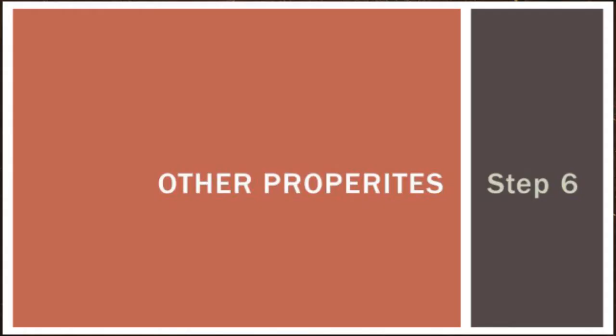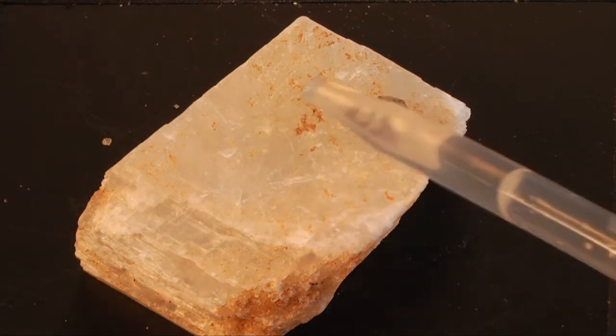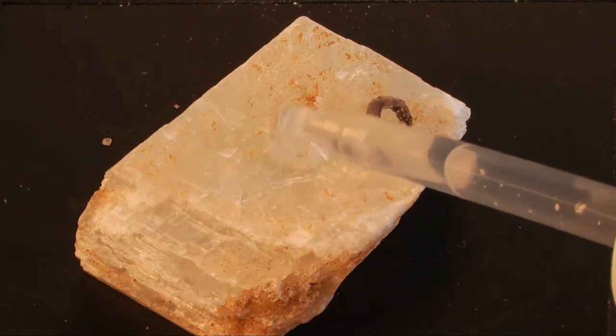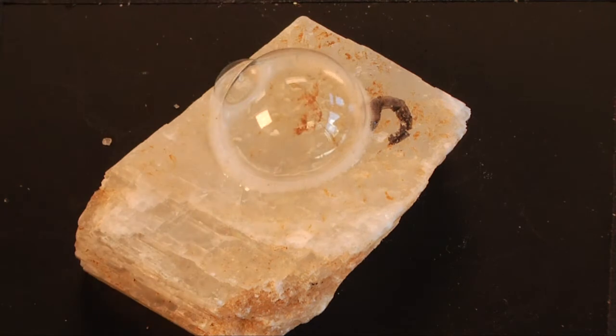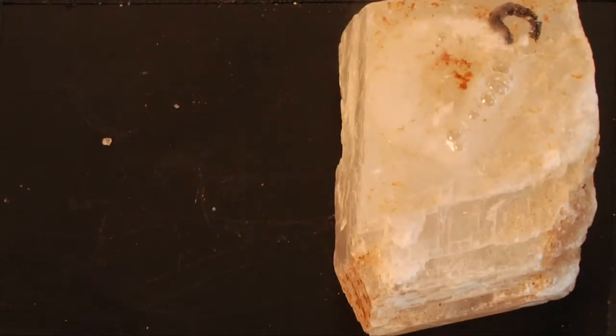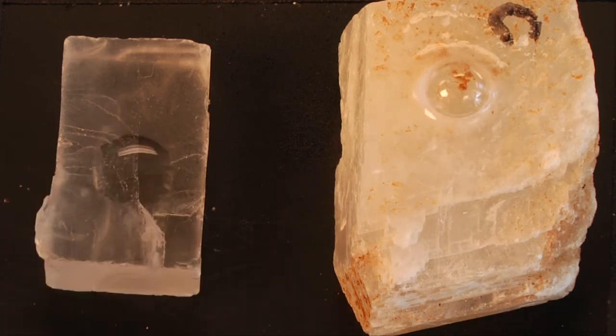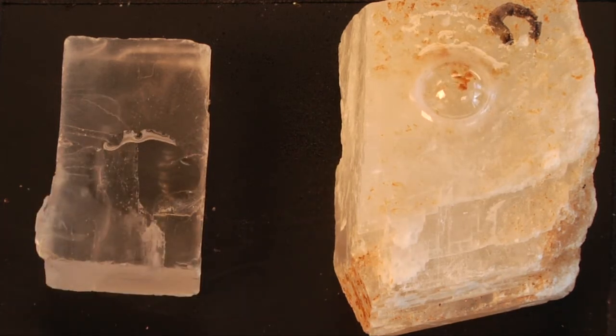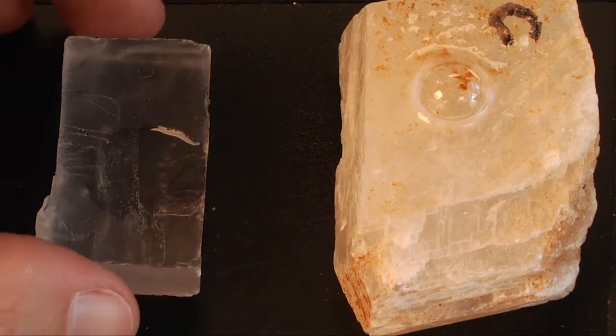The next kind of other properties category is what's called acid reaction. And this is how you test for calcite. Put a little drop of weak hydrochloric acid on and it bubbles or effervesces. And if it bubbles, that means you have calcite. If it doesn't, like this one, will not, just kind of sits there, that means you don't have calcite. So make sure you wipe these samples off once you're done with them.